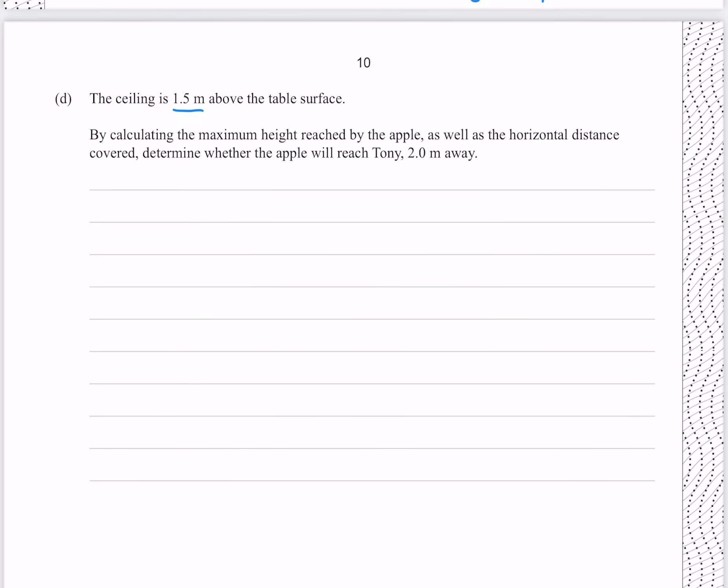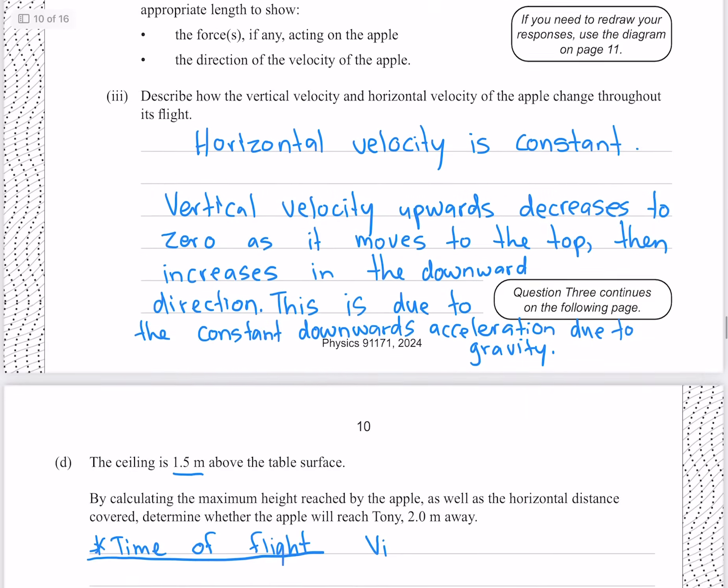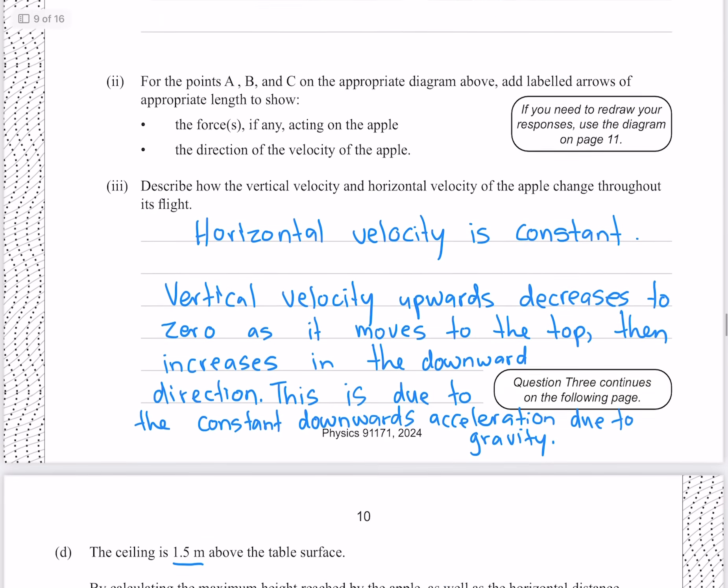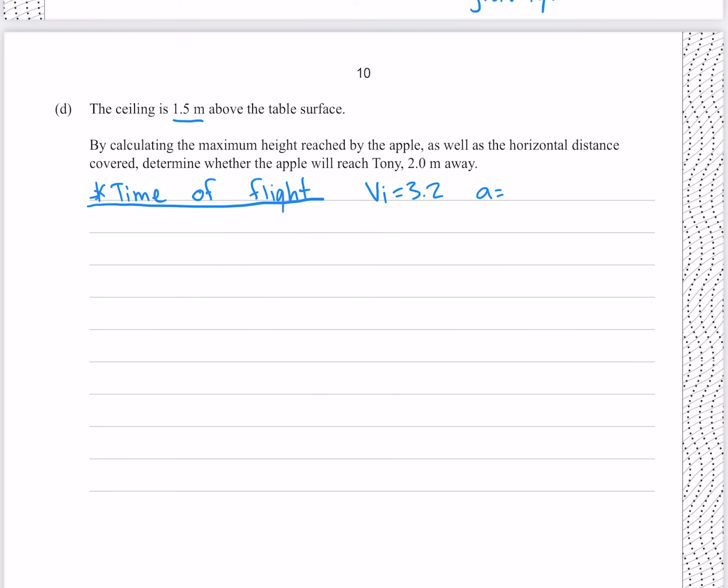The ceiling is 1.5 meters above the table surface. By calculating the maximum height reached by the apple, as well as the horizontal distance covered, determine whether the apple will reach Tony 2 meters away. Let's first find the time of flight. To do this, we know that the initial vertical velocity is what we found earlier to be 3.2. We know the acceleration due to gravity is going to be negative 9.8, and we also know that at the end of the journey, the final velocity is going to be the same 3.2, except in this case it's going to be negative. Knowing these, we should be able to find the time. Our trick for choosing our kinematic equation is to choose the equation that doesn't have a quantity that we're not given and not interested in. In this case, while we're finding the time of flight, we don't know and don't care for the height of the ball, we'll care about that later. And so our equation without distance is VF equals VI plus AT.